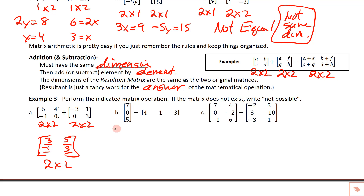This next one is a three-by-one and this one is a one-by-three. Can we add those together? No — the dimensions aren't the same. If the dimensions aren't the same, we can't put them together, so we write 'not possible.'